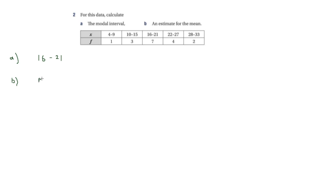The midpoints we have are: 6.5, then 12.5 for 10 to 15, then 18.5, then 24.5, and then 30.5. Each interval has a width of 5, so you divide that by 2 and add 2.5 to the lower boundary to get each midpoint.